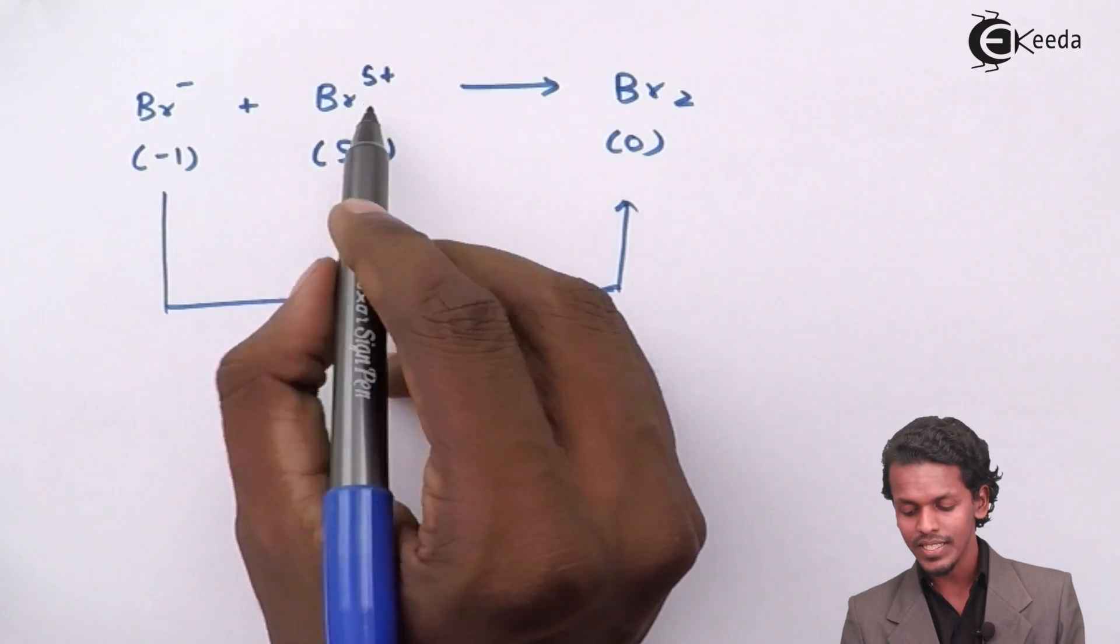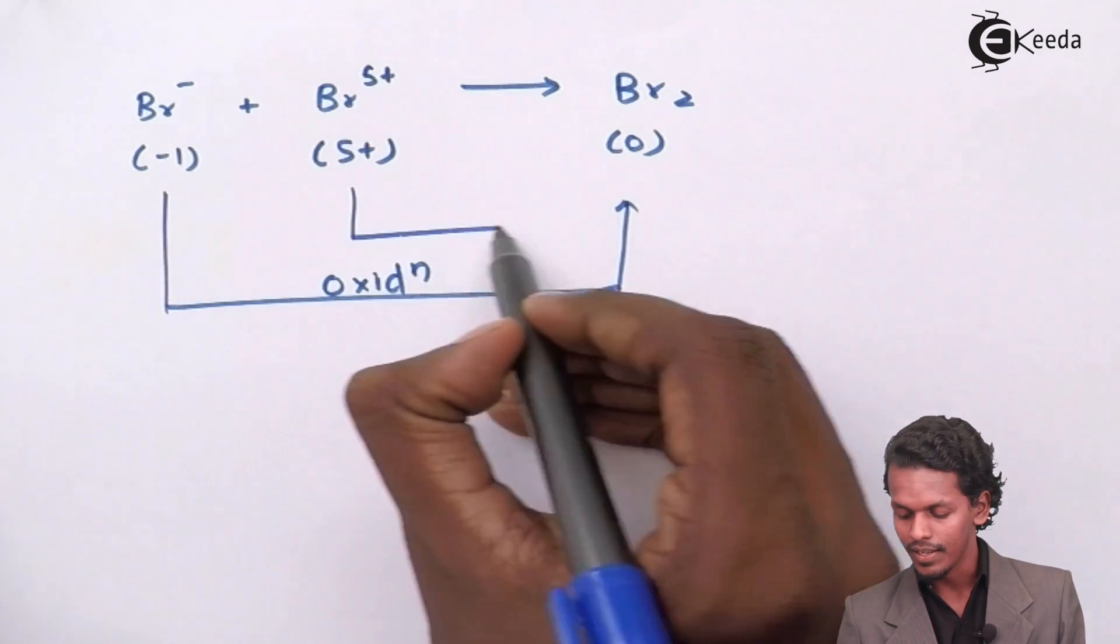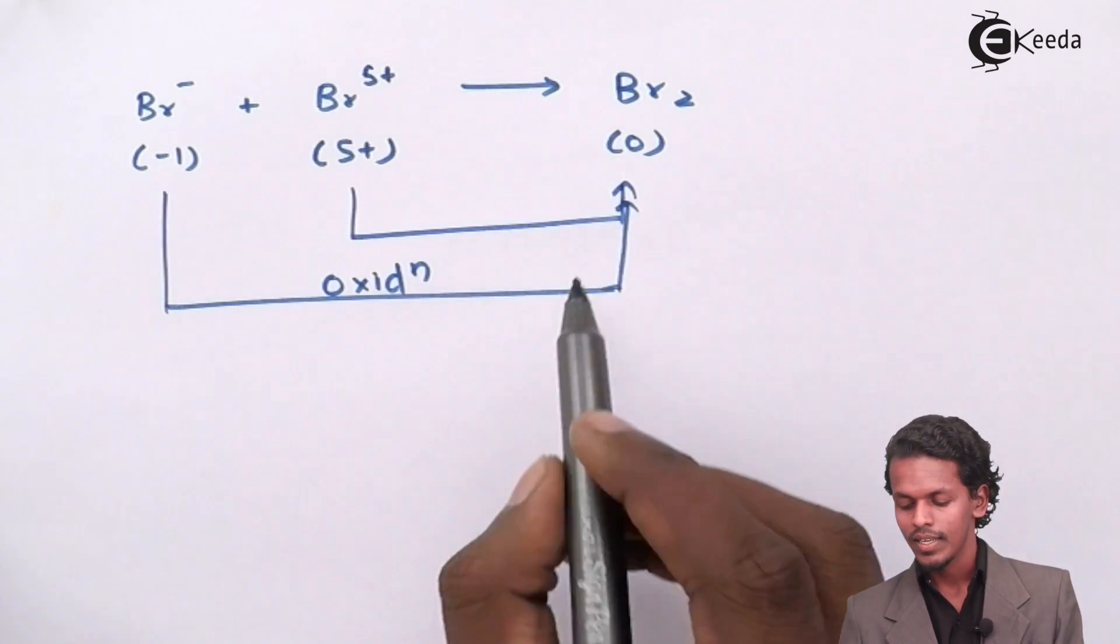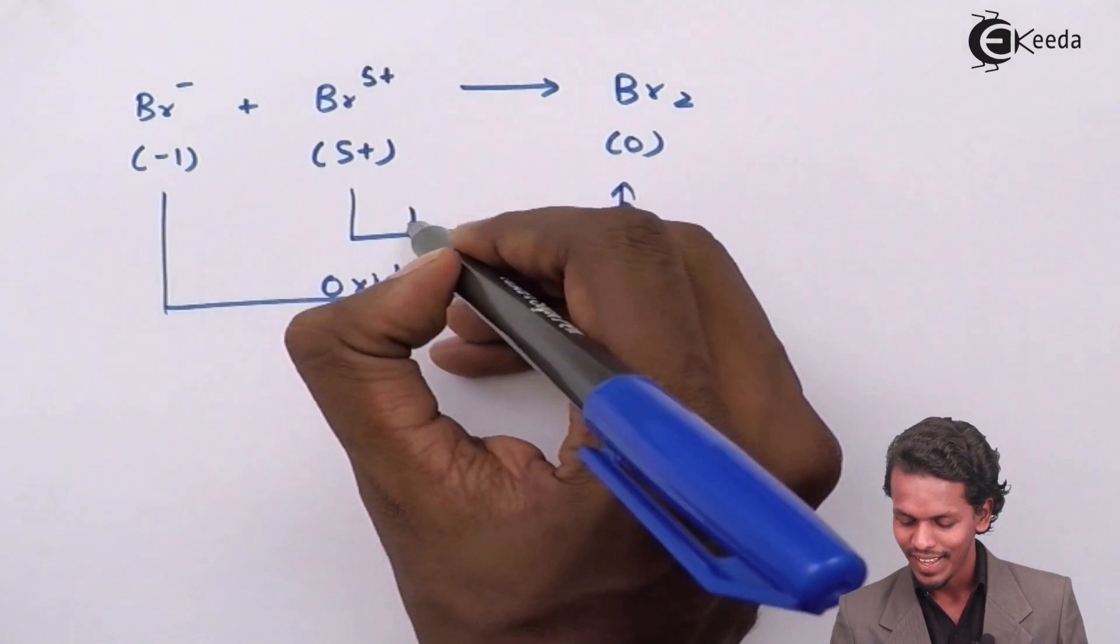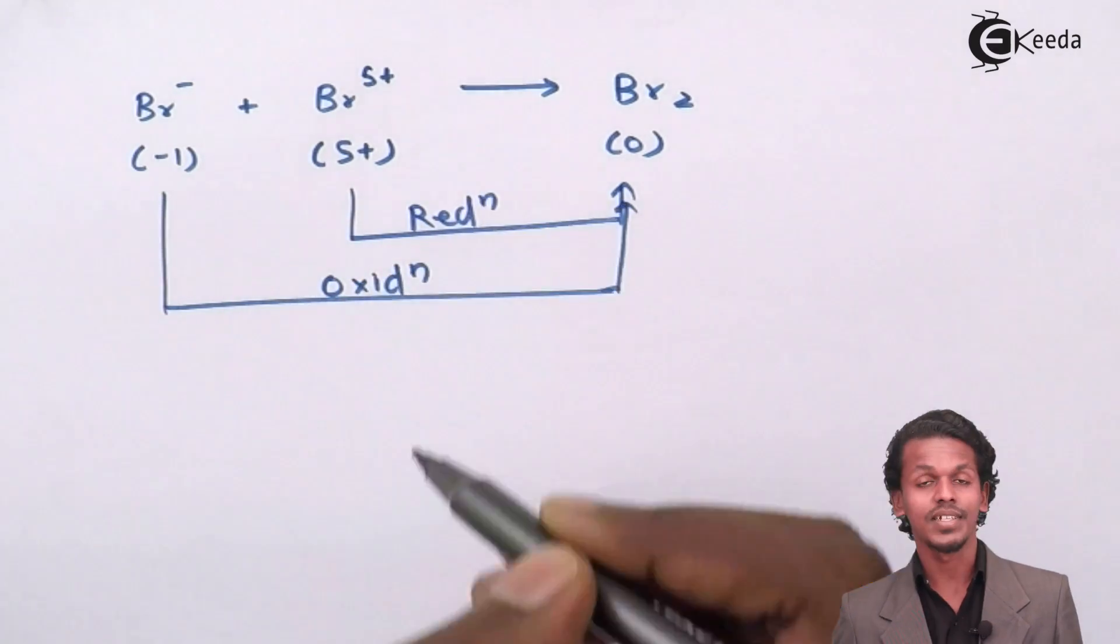If we observe the Br⁵⁺ ion which is converting into the oxidation number of zero, this is only possible if it takes 5 electrons. Because it is taking 5 electrons, it is known as a reduction reaction.